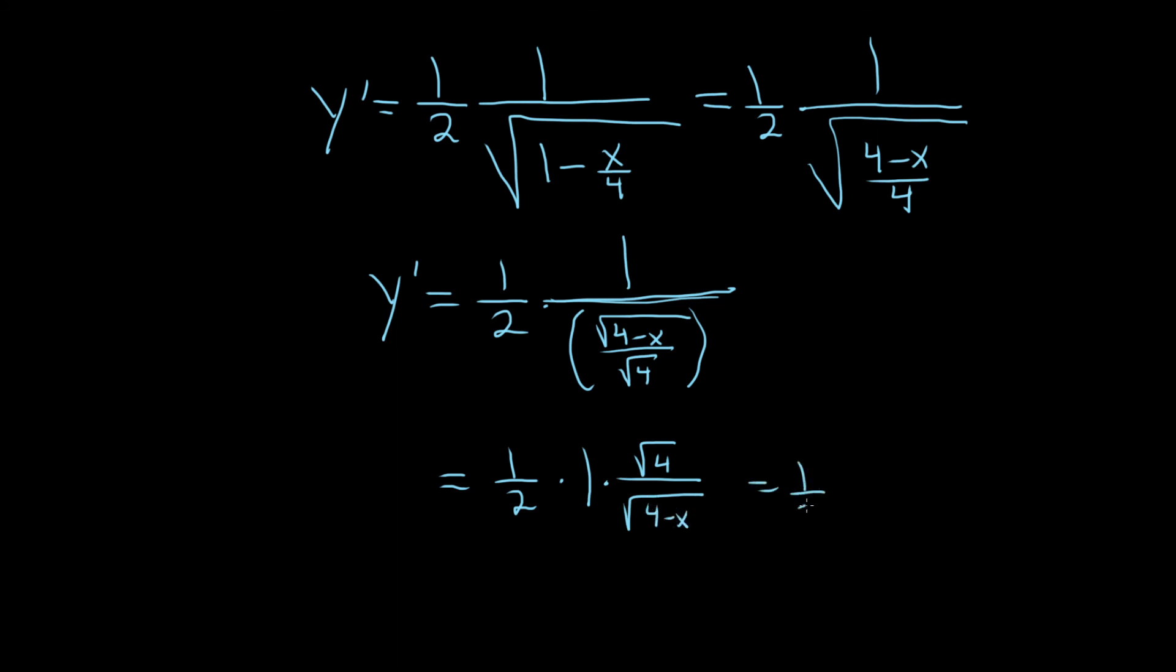So this is 1 half times 2 over the square root of 4 minus x. The 2's cancel, and so you get 1 over the square root of 4 minus x. And that would be the derivative.